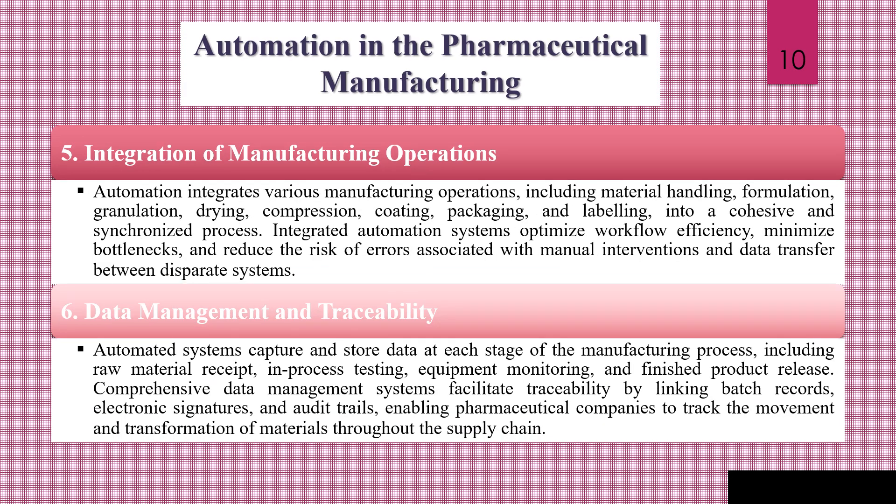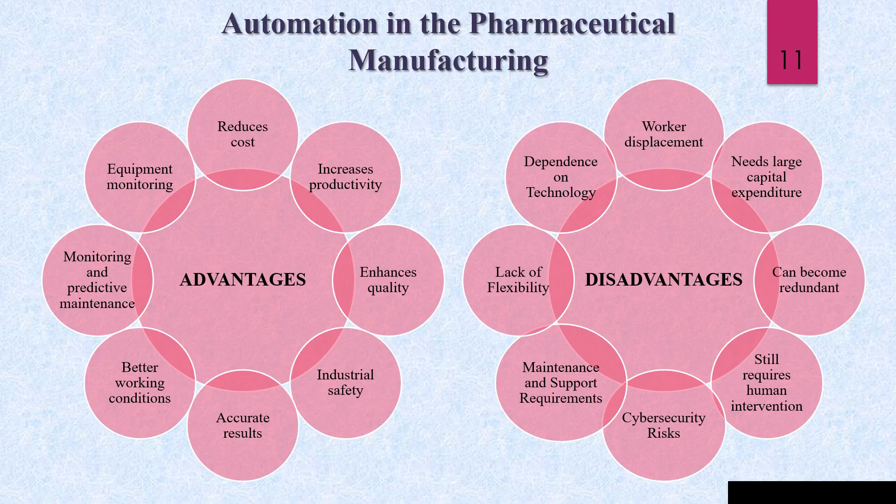Automated cleaning-in-place (CIP) and sterilization-in-place (SIP) systems are being used to minimize downtime and labor requirements following GMP standards. Fifth is integration of manufacturing operations. Automation integrates manufacturing operations including material handling, formulation, granulation, drying, compression, coating, packaging, and labeling into a cohesive and synchronized process. Data management and traceability: automated systems capture and store data at each stage of the manufacturing process including raw material intake, in-process testing, equipment monitoring, and finished product processes, enabling traceability by linking batch records and electronic signatures through the supply chain.